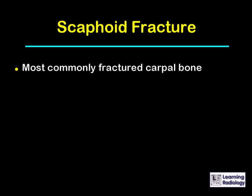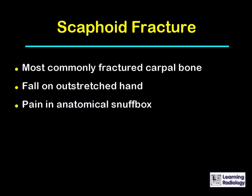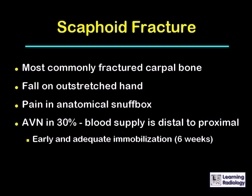A scaphoid fracture is the most common fracture of the carpal bones. It occurs from a fall on an outstretched hand. There is pain classically in the anatomical snuff box. In about 30 percent of cases, avascular necrosis can occur because the blood supply to the scaphoid is from distal to proximal, so fractures especially across the waist of the scaphoid can result in avascular necrosis of the proximal pole. Early and adequate immobilization for up to six weeks is required to reduce the risk.